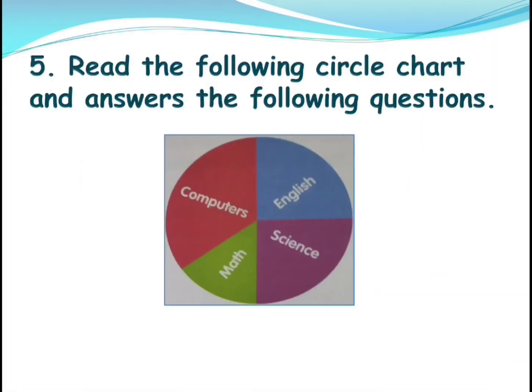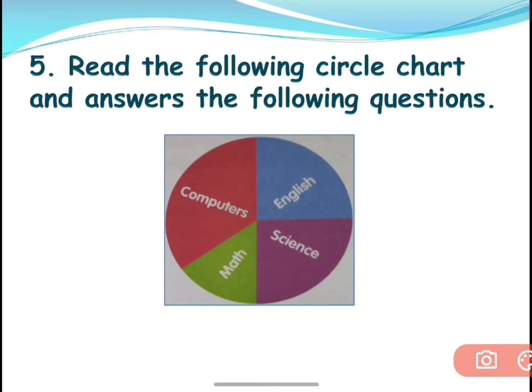Now coming to your circle chart. So read the following circle chart and answer the following questions. Here is a circle where it is divided into some parts — that is nothing but your circle chart. Here if you see, you have subjects. The title of this circle chart is nothing but your subjects: computers, English, science and math. It might be favorite subjects or the subjects you have in school. But if you see, computer is having more space, meaning if you take this as favorite subject, the most favorite subject is computers because it is occupying more space, and the least is math.